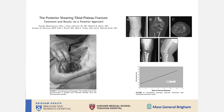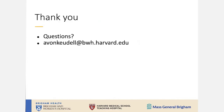From our MGH experience, this intraoperative photograph shows going from the medial side all the way to the lateral side, with the medial head of the gastrocnemius divided and retracted. When you do that, make sure to identify the neurovascular structures first. With that, thank you very much and feel free to reach out with any questions by email.